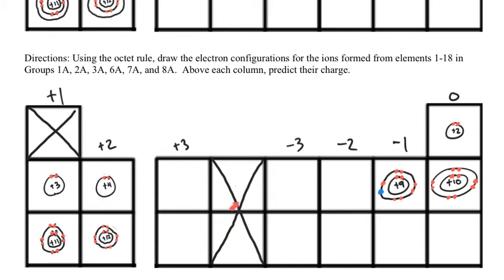This is why we had you cross off family 4A, the family with carbon — because what does it do? Is it plus 4 or minus 4? Well, it kind of depends on what it's bonding to, which is why carbon is quite versatile. The rest of these you can see the patterns forming. If it's on the left side, it's going to try to go to the right to become like the noble gas. If it's on the right side, it will lose electrons to become like the noble gas in the row before it.